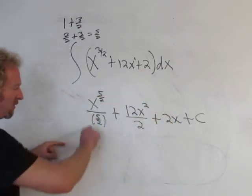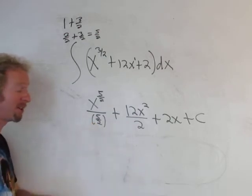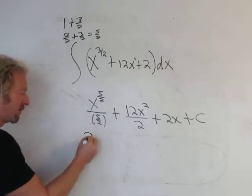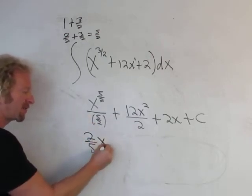Here, you don't want to leave it like this. When you divide by 5 halves, you really multiply by the reciprocal. So this is going to be 2 fifths x to the 5 halves.